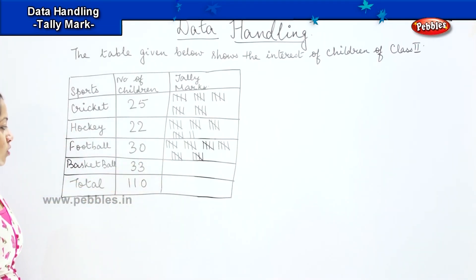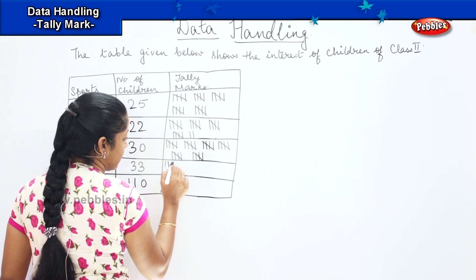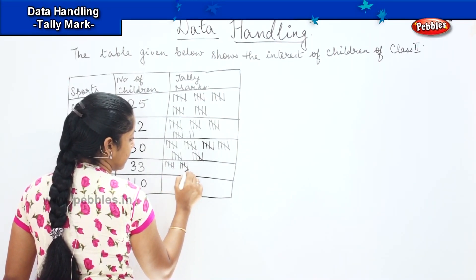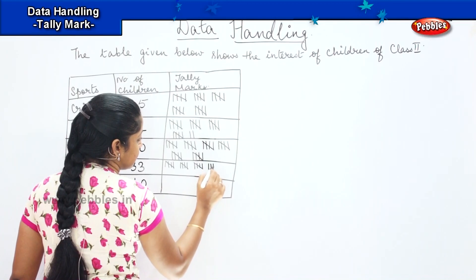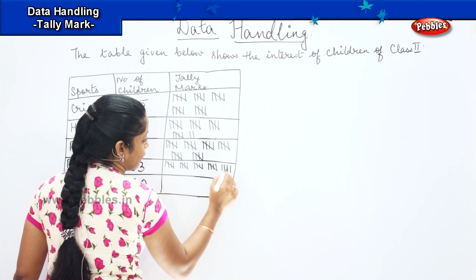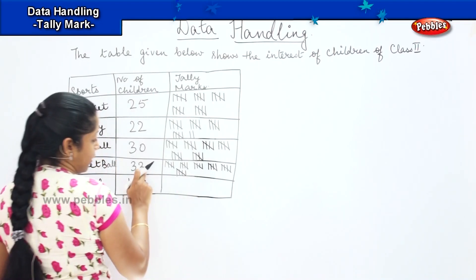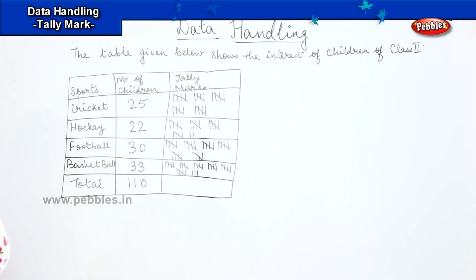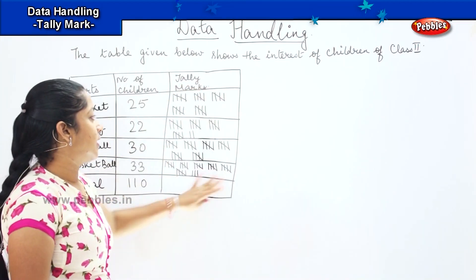Is it clear children? The next one says 33. How are we going to draw? 1, 2, 3, 4, 5, 6, 7, 8, 9, 10... then continuing to 22, 23, 24, 25, 26, 27, 28, 29, 30, and then 1, 2, 3 more to make 33. So we have done the first step which is drawing the tally marks.